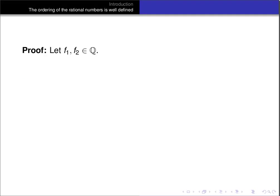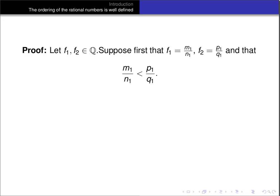Let's prove that. We'll begin by assuming that f1 and f2 are rational numbers. Suppose first that we have m1 over n1 naming f1, and p1 over q1 naming f2. So we've chosen specific fractional representations for these rational numbers: m1 over n1 and p1 over q1. And let's suppose that m1 over n1 is less than p1 over q1, so f1 is less than f2.